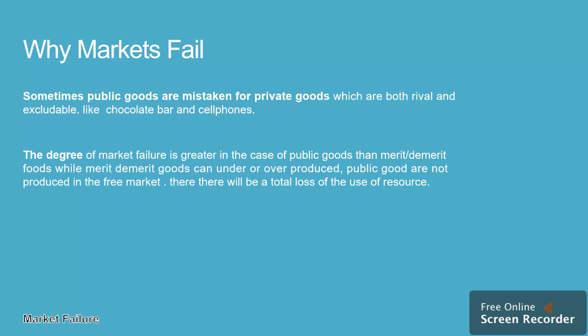The degree of market failure is greater in the case of public goods than merit or demerit goods. While merit or demerit goods can be under- or over-produced, public goods are not produced at all in the free market, resulting in the total loss of the use of those resources.